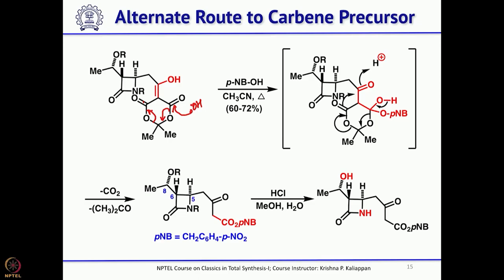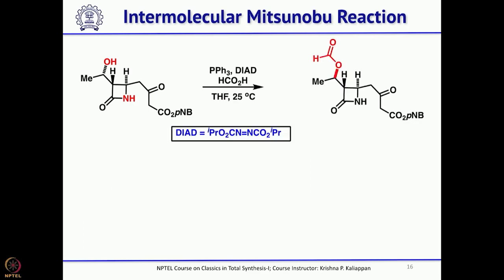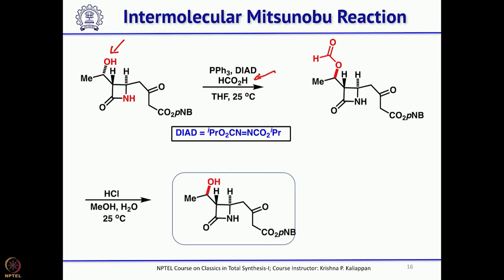Once the beta-ketoester is in hand, the TBDMS groups (both O- and N-protected) are removed. The hydroxyl group present is alpha-configured, but in thienamycin it should be beta. To invert this stereocenter, a Mitsunobu reaction is performed using formic acid to give the formate ester (OCHO), which upon hydrolysis gives the OH with inverted stereochemistry. This gives the key intermediate.